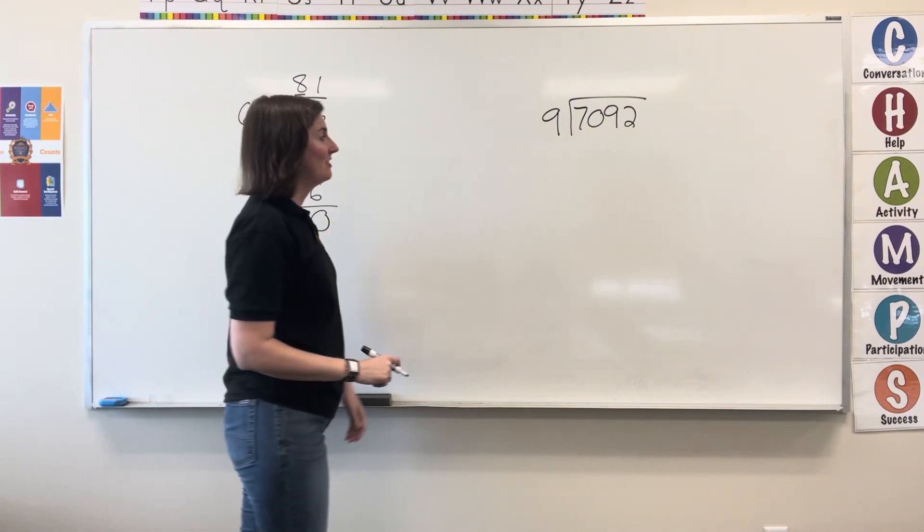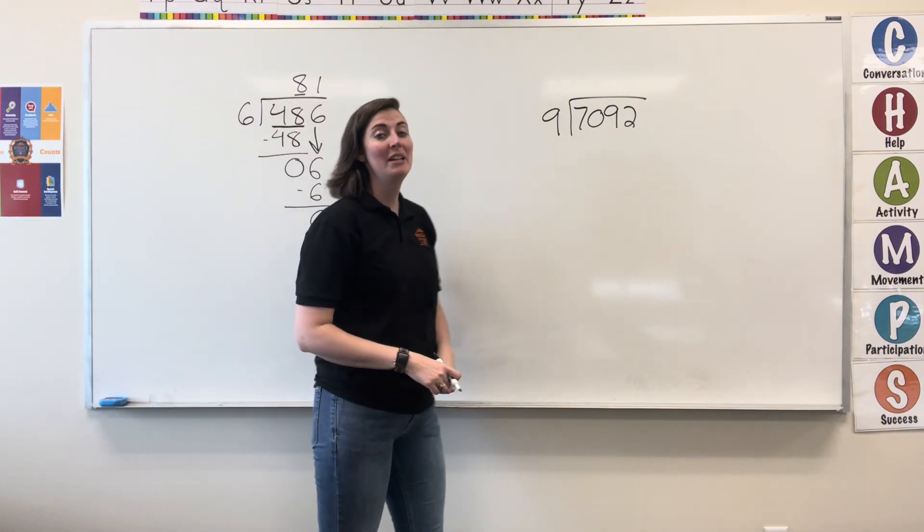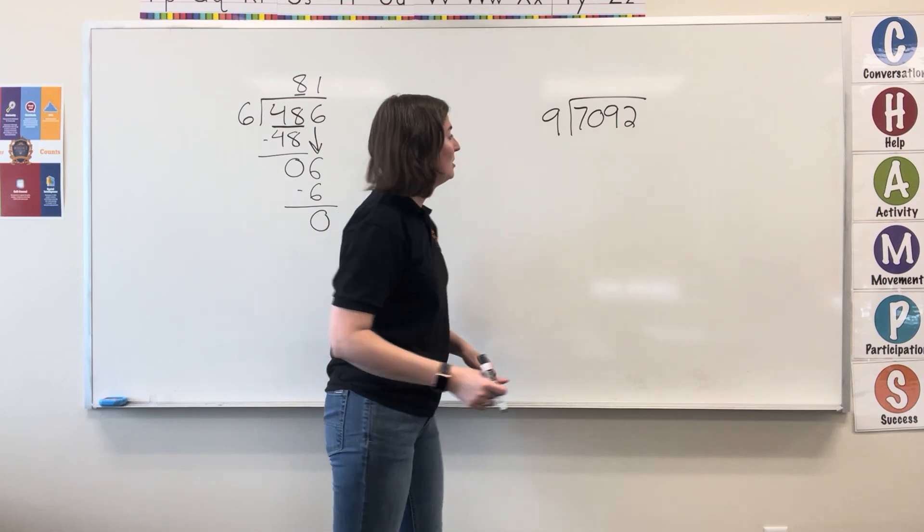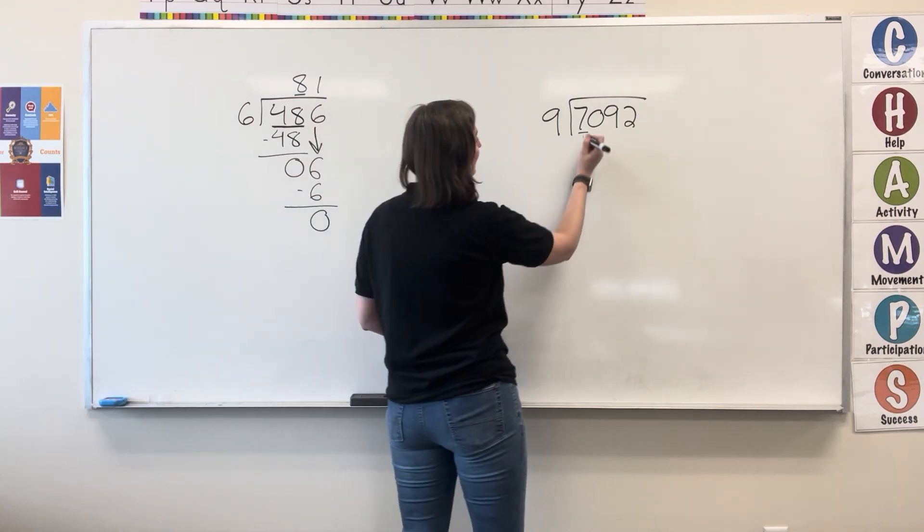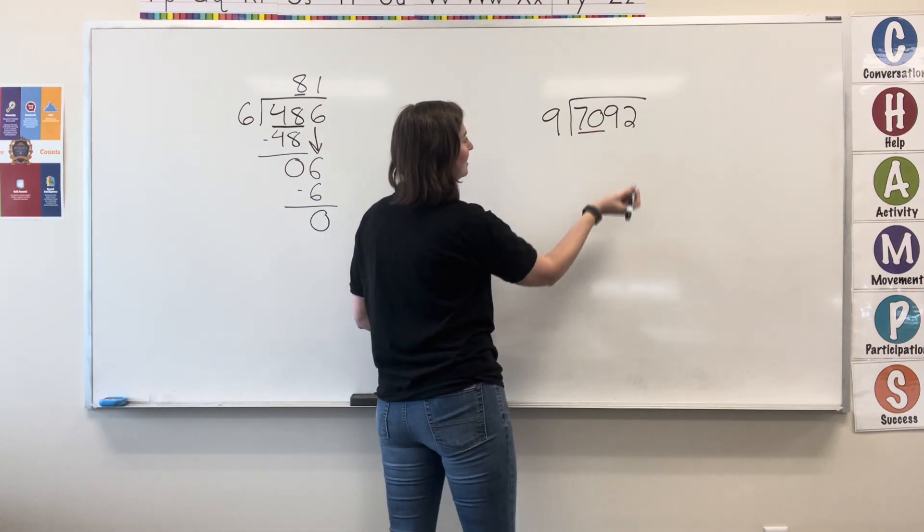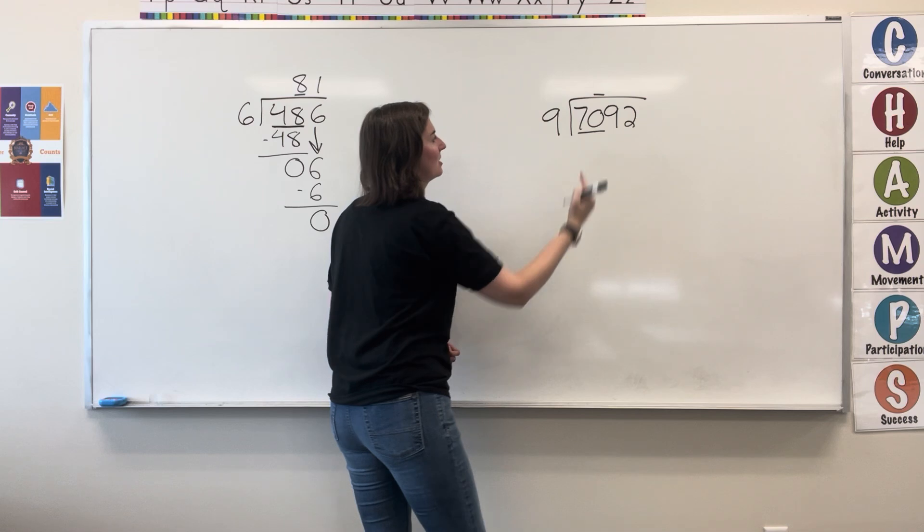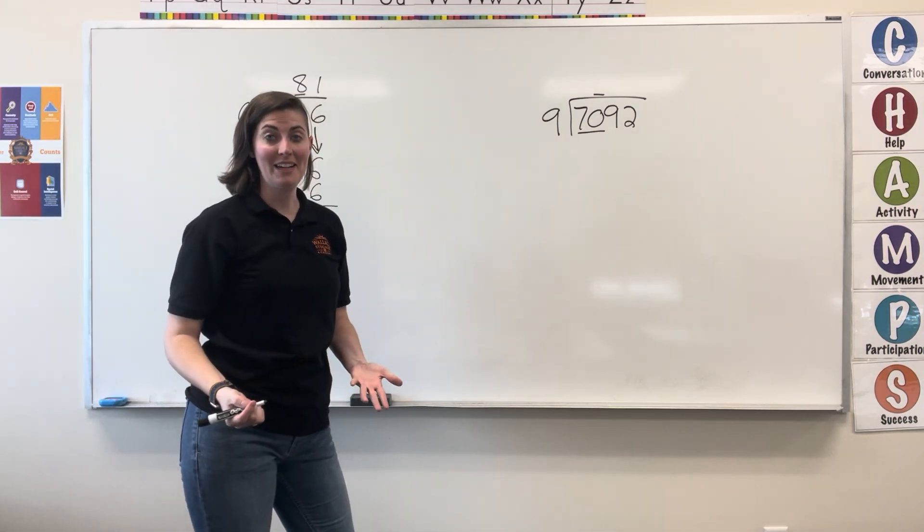Let's look at another example here. I have 7,092 being divided by 9. I'm going to check to see if 9 fits into 7. No, 9 is too big. See if 9 fits into 70. Yes. My quotient is going to start above 70. Now I can start dividing.